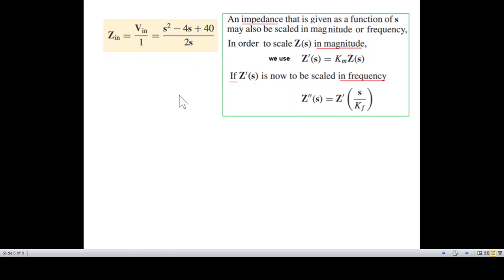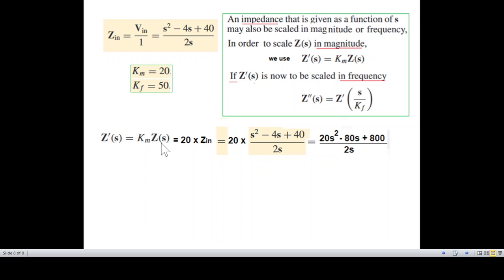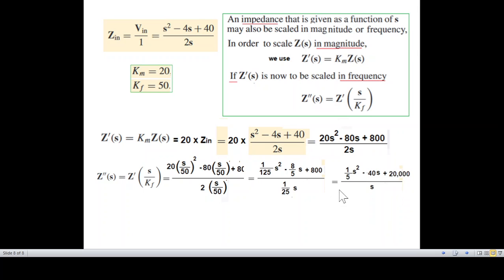We have Km and Kf, we'll follow this. So Z' of s is Km times Z_s, which is actually Z_in, and Km is 20. So using this, this is our Z' of s equation. And now we'll find Z'' by using this formula, s over Kf. Kf is 50, and solving this step by step, so this is our final value of Z'' of s, and this is the Z_in of the scaled circuit.